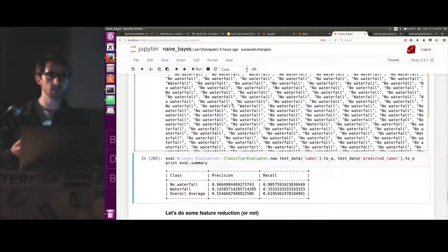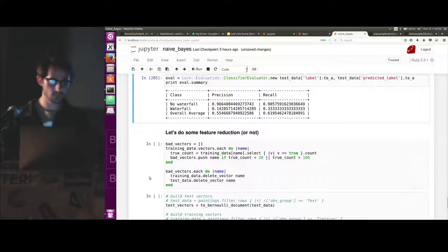And the model is going to read that and say, oh, there was this one painting once that had a barn in it and a waterfall. So I'm going to predict waterfall. So in reality, you would go back and try to identify those features that are just noise in your model and eliminate them and you get a better result.